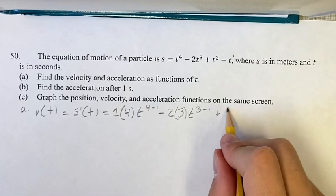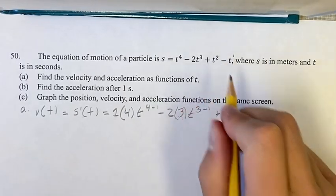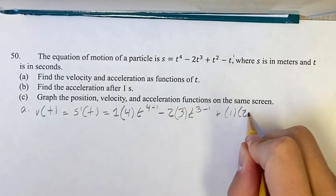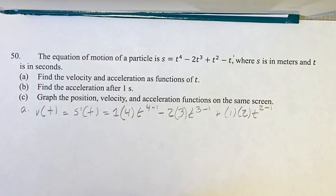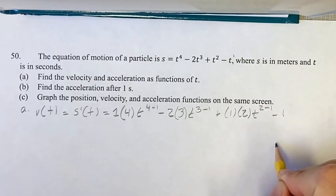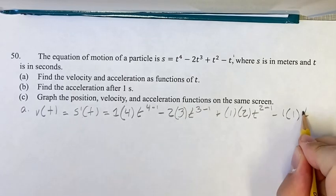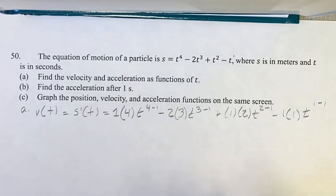Plus one t squared. Bring down the exponent. The new exponent is the old one minus one. Once again, the coefficient here is negative one. Exponent is one. The new exponent is the old one minus one.